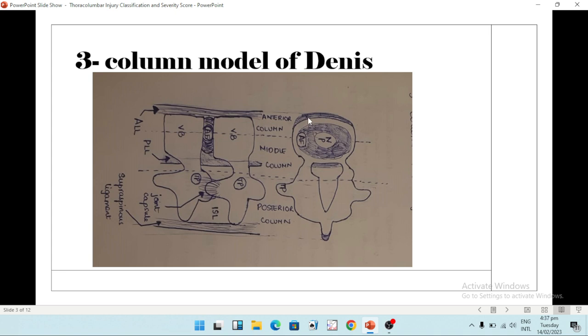Now we come to the middle column. The middle column consists of the posterior half of the disc and the body, along with the posterior part of the annulus fibrosus and the posterior longitudinal ligament. This is also a part of the middle column.